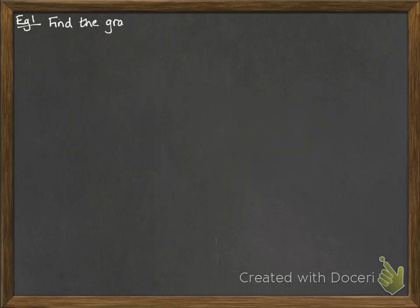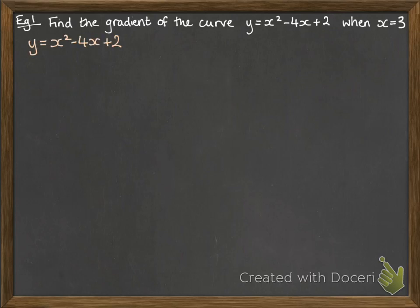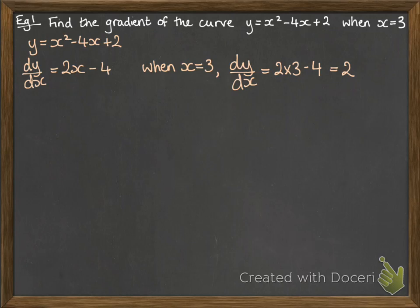Let's see how we actually use these in some examples. So we want to find the gradient of this curve when x is 3. So we work out our gradient function first. Then we substitute in x equals 3, and we've got the gradient is 2.